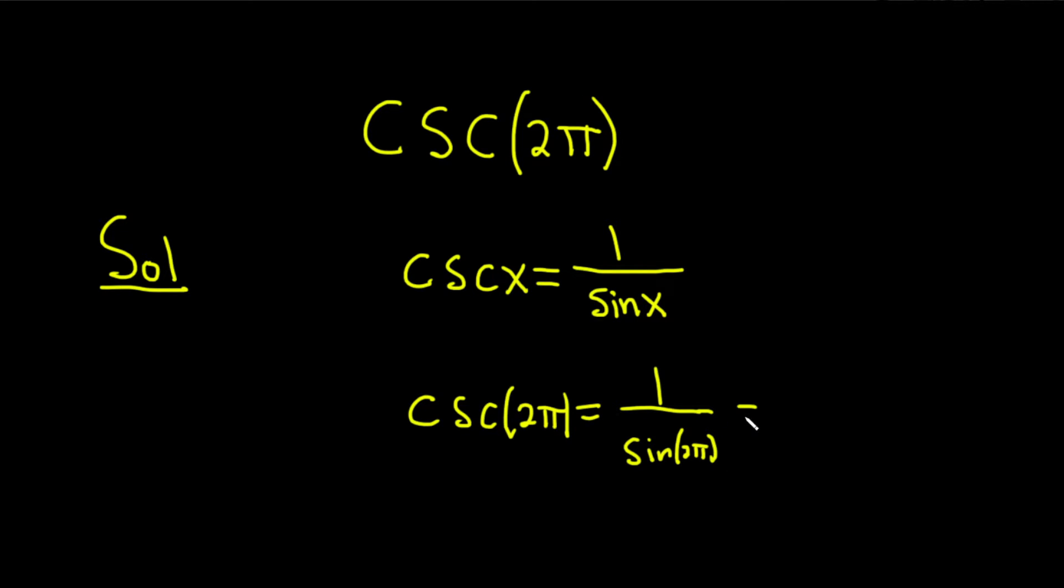The problem is the sine of 2 pi is 0, so you get 1 over 0. This doesn't work.